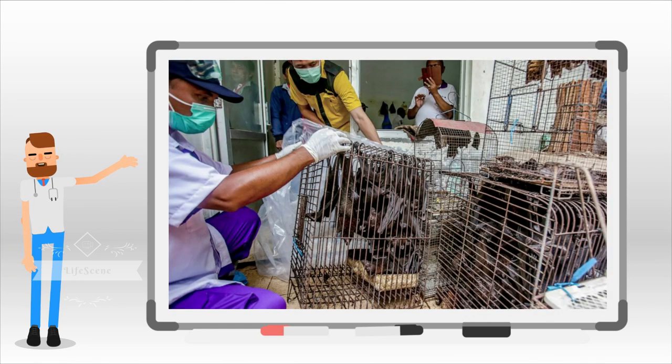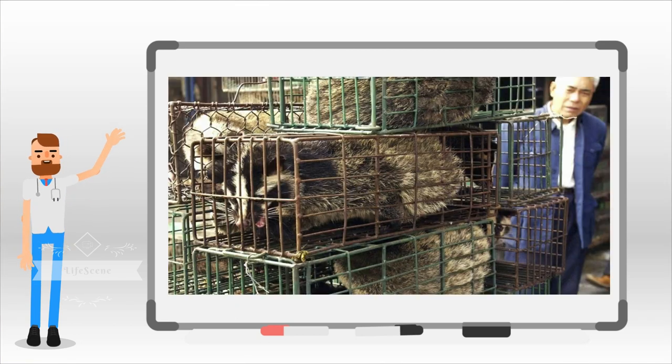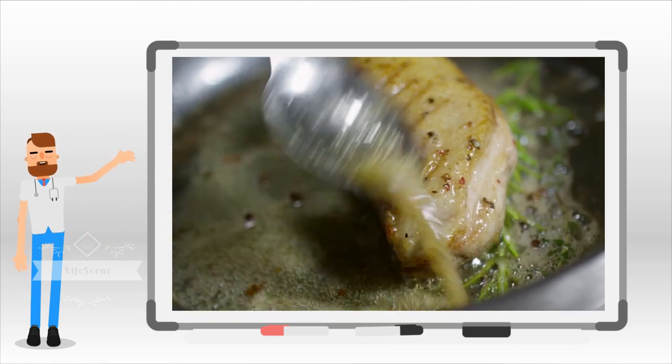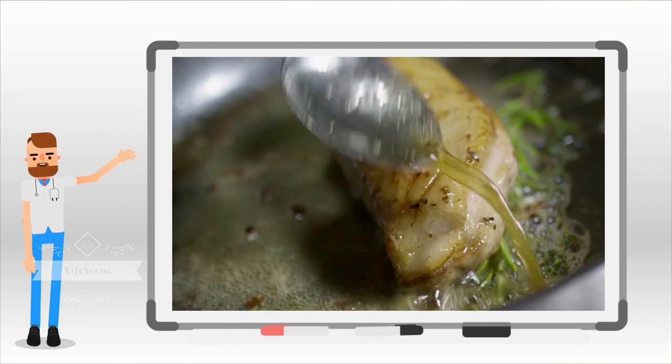Actions that can be taken to prevent infection from the animal source include avoiding unnecessary unprotected contact with animals, washing hands after contact with animals or animal products, and ensuring that animal products are cooked thoroughly before they're consumed.